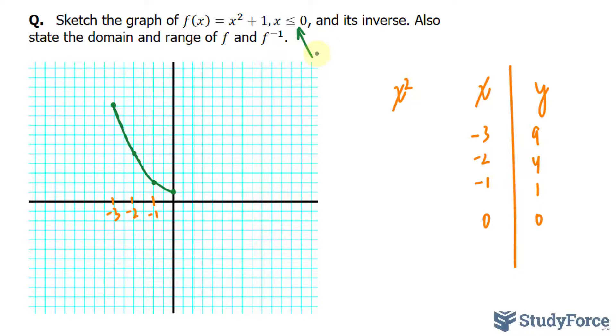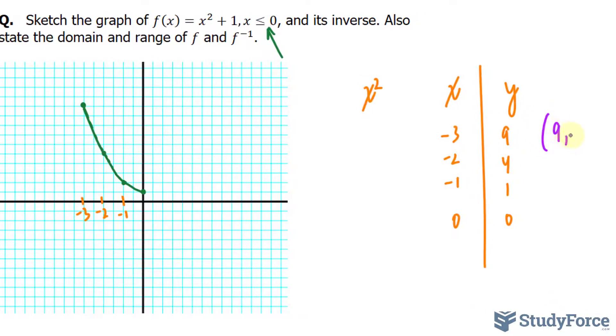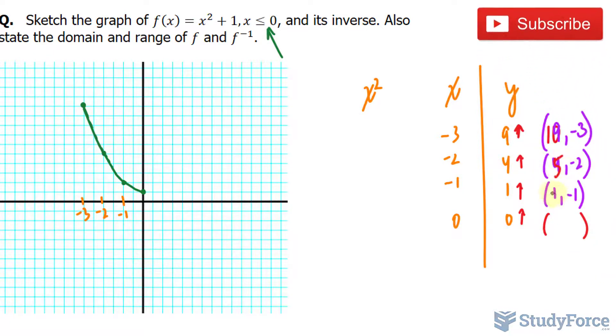Now, I need to find the inverse or graph the inverse. So I will interchange 9 and -3 where I get the ordered pair (9, -3). Notice that the y is now the x, 4 and -2, 1 and -1, and (0, 0) remains the way it is. Also, remember, we are looking at x² + 1, the inverse, and all of these would go up by 1. So technically, we should have this as 10, 5, 2, and 1 and 0.